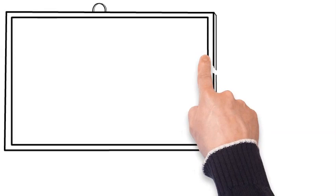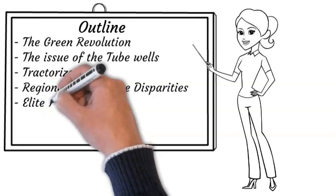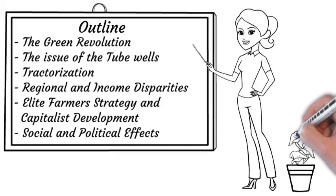The topics we will be discussing in this video include the era of the green revolution, the issues faced by Pakistan regarding tube wells, the critical issues in Pakistan's agriculture during that period, regional and income disparities, and lastly how these economic factors impacted Pakistan socially and politically.